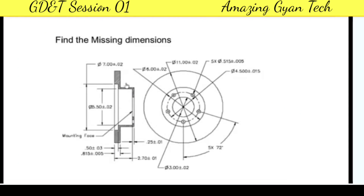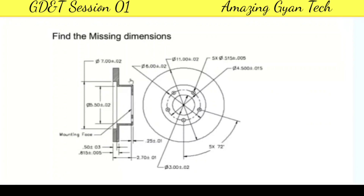Here is a drawing created for manufacturing a component by an engineer. It appears complete — the thickness is 0.815, depth of counter bore is 0.5, OD is 11, bore size is 5.5, counter bore dimension is 7mm, small hole dimension is 3, thickness 0.25, PCD is 0.515, and PCD diameter is 4.5. All dimensions are given with tolerances. Using this drawing, a component was created and inspected — but would you accept the resulting part?